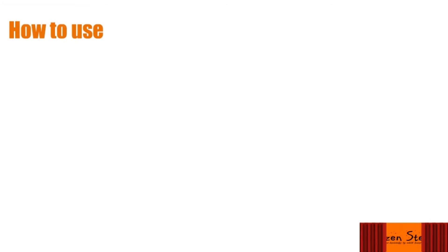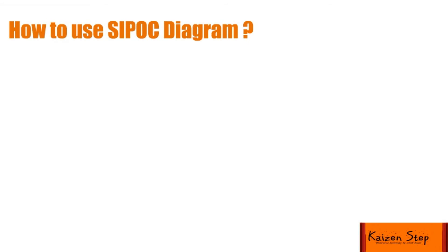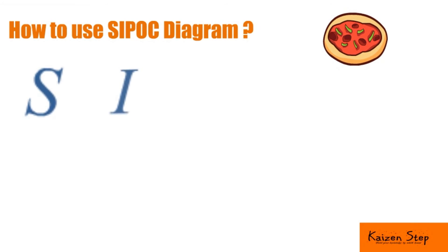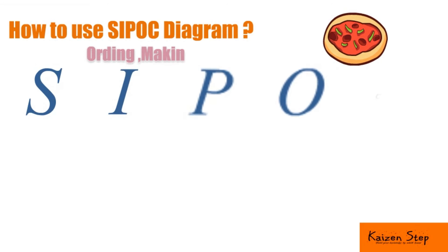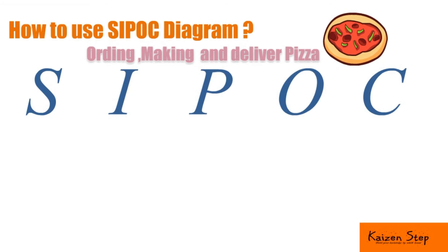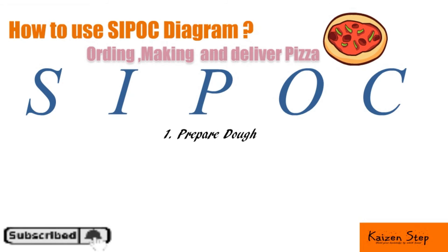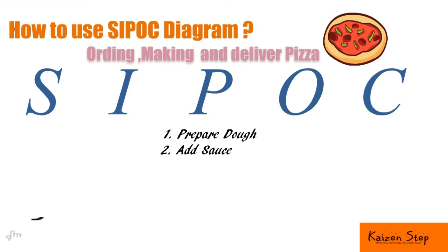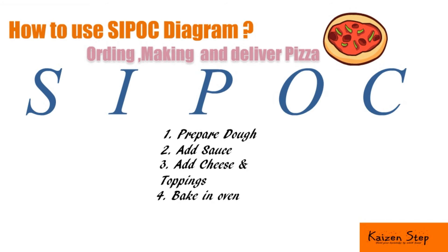How to use a SIPOC Diagram — let's try an example: making pizza. Our process name is making pizza. The process steps are: Step 1, Prepare dough; Step 2, Add sauce; Step 3, Add cheese and toppings; Step 4, Bake in oven; Step 5, Remove from oven and serve.